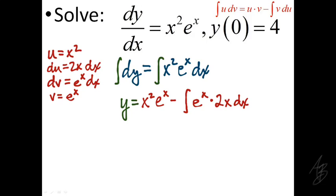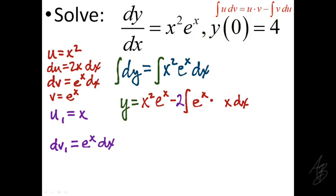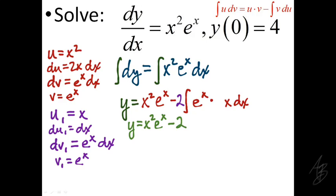Plugging into the formula gives x squared times e to the x minus the integral of e to the x times 2x dx. We have a simpler integral but still can't evaluate it directly since it's e to the x times a function of x. So we integrate by parts again, using subscript 1 for the new variables: u₁ equals x, dv₁ equals e to the x dx, so du₁ equals dx and v₁ equals e to the x.